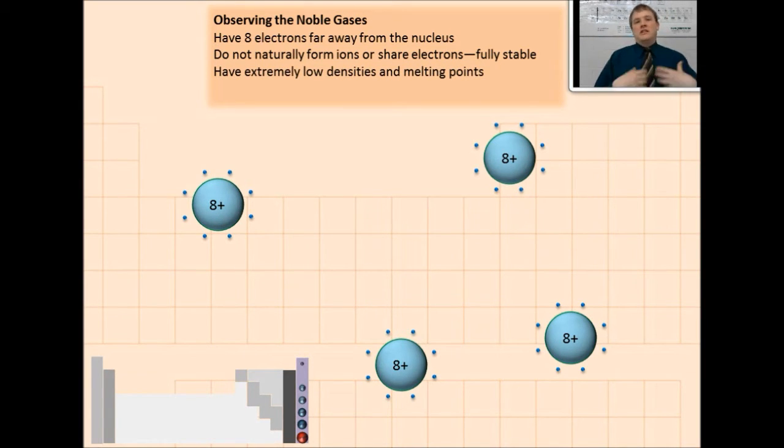That causes the noble gases to have extremely low densities. They don't really pull together tightly. They spread apart from each other. They don't need each other. And they also have very low melting points for the same reason. That's why the noble gases are all gases at room temperature because they don't have any reason to pull together to make a liquid or a solid.